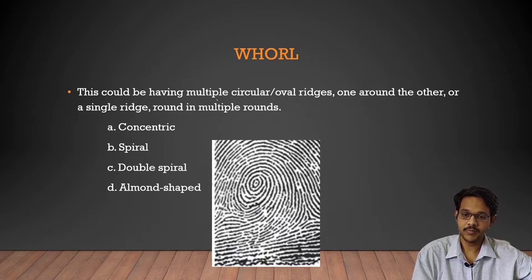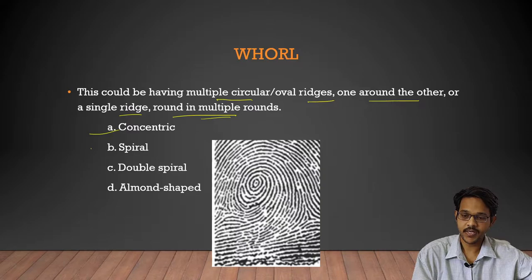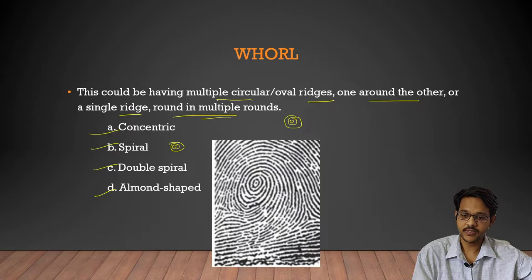Whorls can have multiple circular or oval ridges one around the other — they may be a single ridge or multiple rounds. Subtypes include concentric, spiral, double spiral, and almond-shaped. Concentric whorls are like concentric rings; spiral is like a spiral; double spiral has double rings; and almond-shaped is shaped like an almond. Whorls are essentially concentric, circular, or oval ridges.